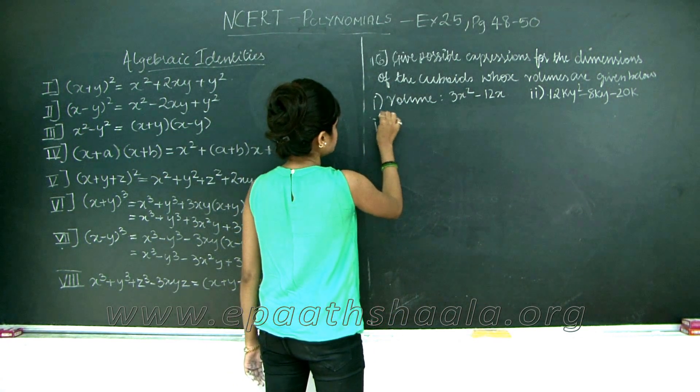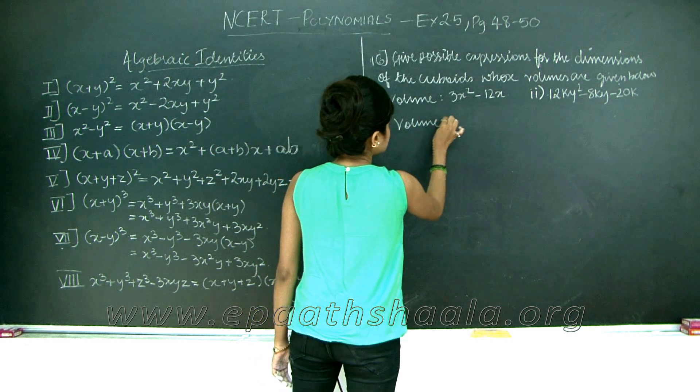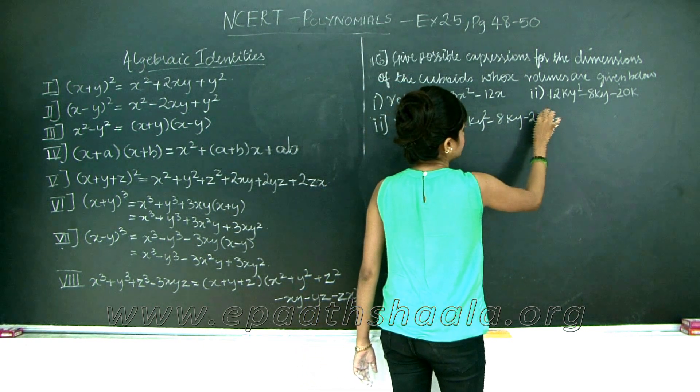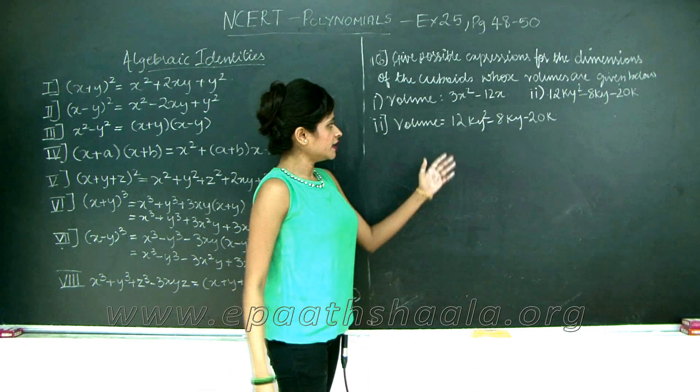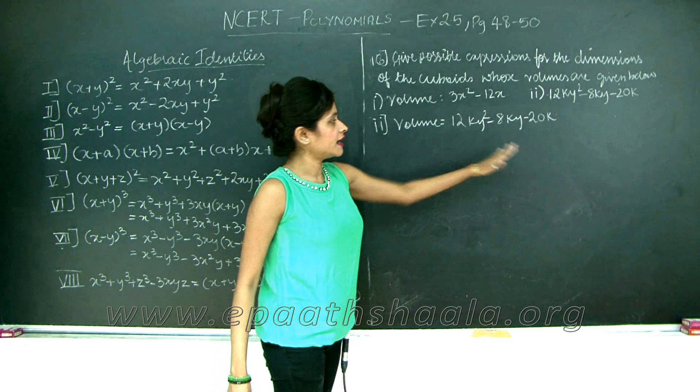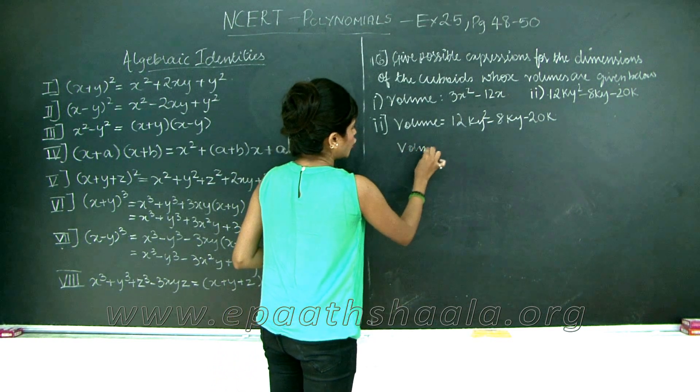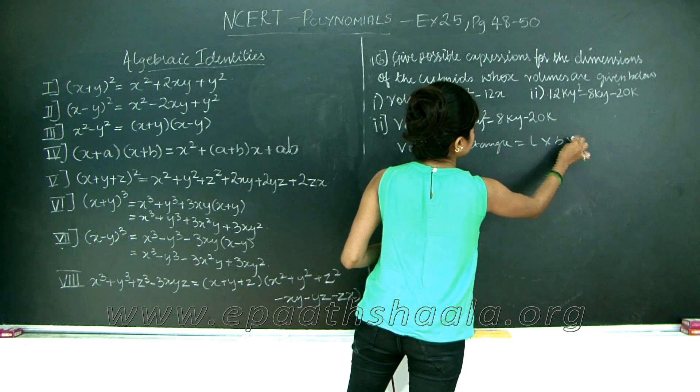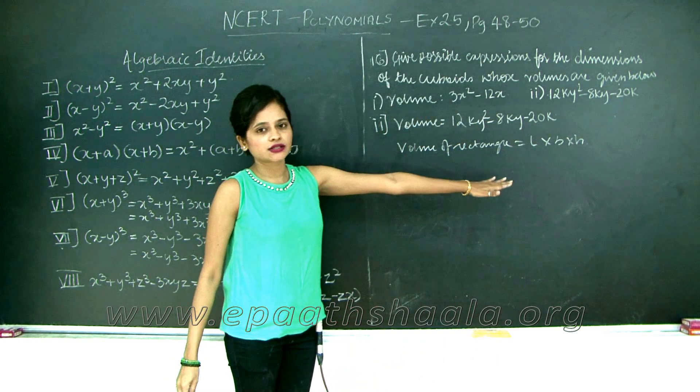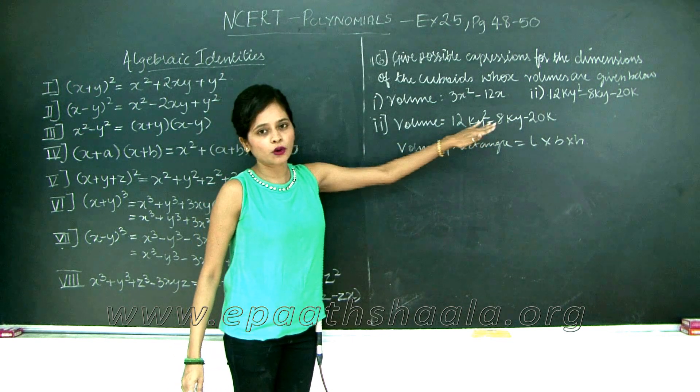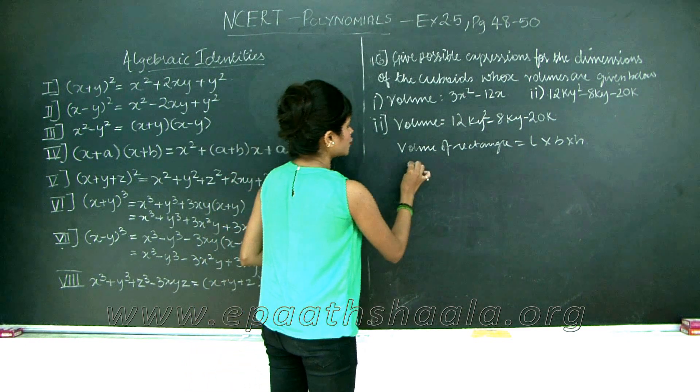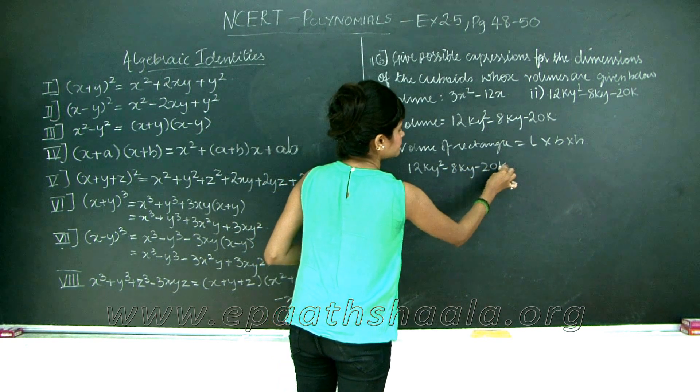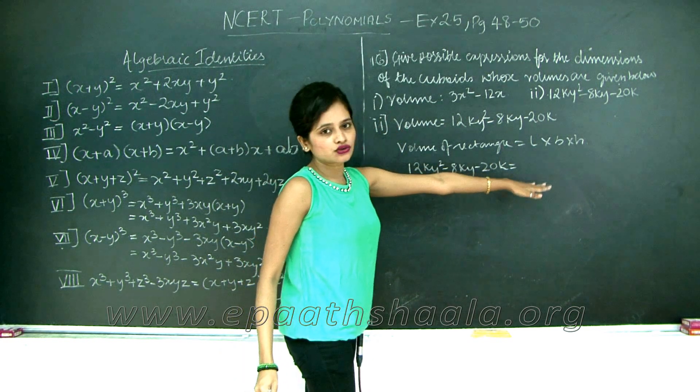My second question is volume is equal to 12ky square minus 8ky minus 20k. Now my volume is nothing but the product of length, breadth and height for the cuboid. So I am going to rewrite this as volume of rectangle is equal to length into breadth into height. What is my volume? It is this polynomial expression: 12ky square minus 8ky minus 20k. I do not know my length, breadth and height because that is what I need to find, the dimensions.